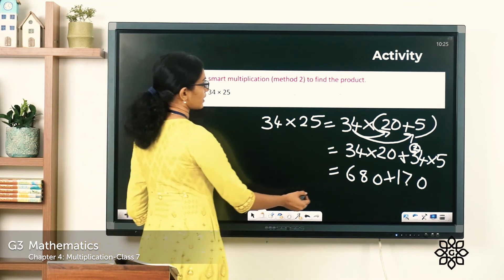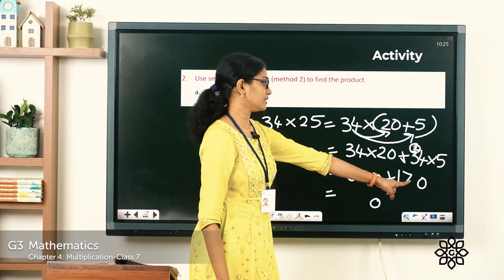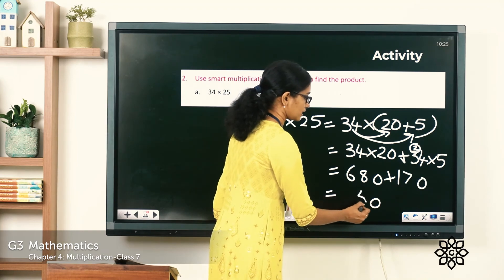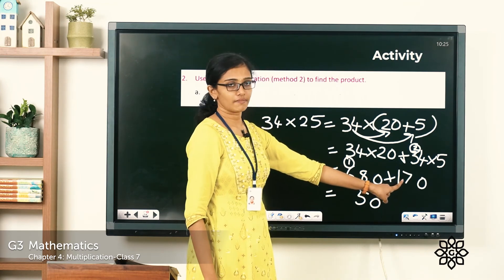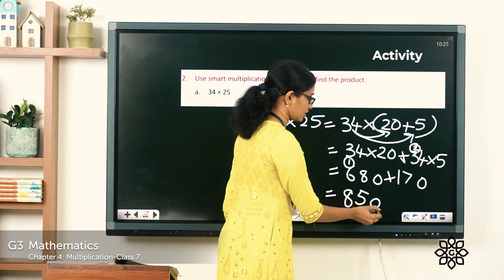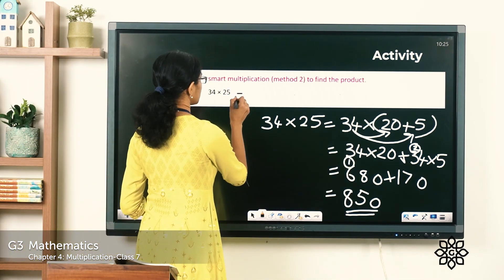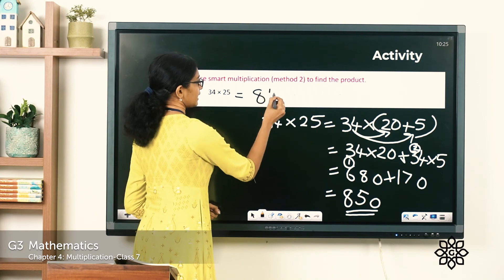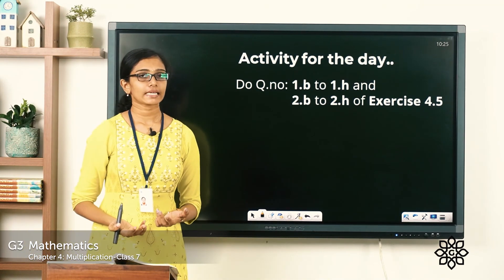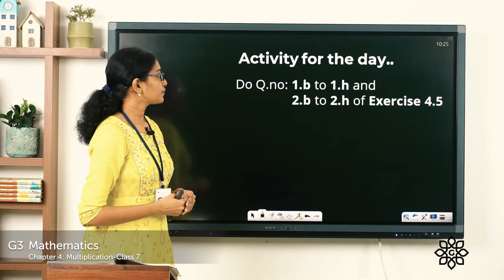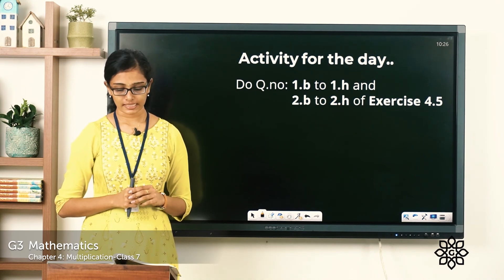So what is the final product? Let's add the numbers: 0 ones plus 0 ones is 0 ones; 8 tens plus 7 tens — 8 plus 7 is 15, write the 5 and carryover 1; we have 6 hundreds plus 1 hundred is 7 hundreds, plus the carryover 1 is 8 hundreds. The final product is 850. So 34 into 25 is equal to 850. I hope your answer is correct. Now you can go through the topic once again if you're still not clear, and complete questions 1b to 1h and also questions 2b to 2h of exercise 4.5.